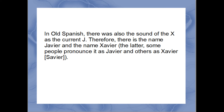In old Spanish, there was also the sound of the X as the current J. Therefore, there is the name Javier with J and the name Javier with X. The latter, some people pronounce as Javier and others as Xavier.